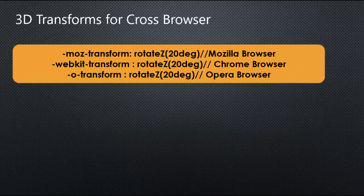For 3D transforms with cross-browser support: if we are using Mozilla browser, we need to apply -moz- before the transform property. For Chrome, Safari, iPhone, and Android browsers, we need to use -webkit- before the transform property. If we are using Opera browser, we need to use -o- before applying the transform property.